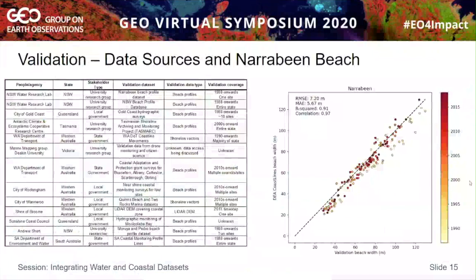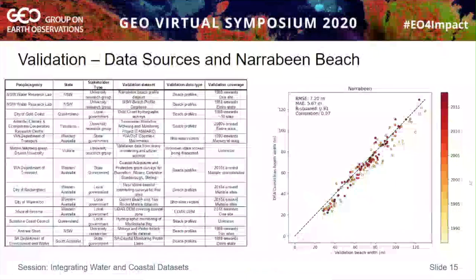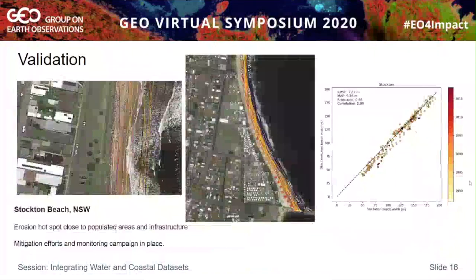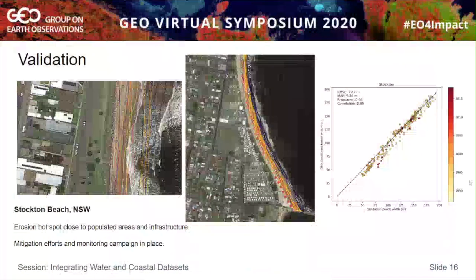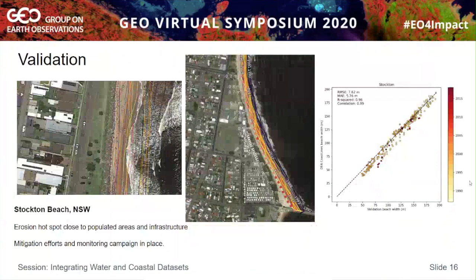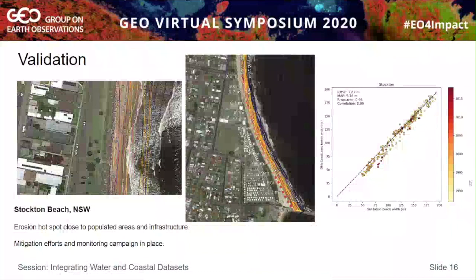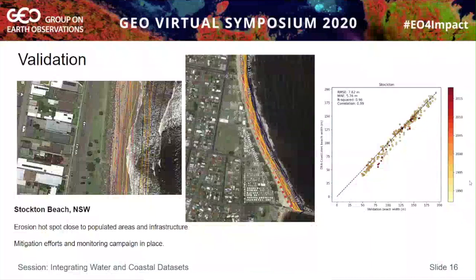We reached out to state and local government sources to obtain validation data, which they kindly supplied in multiple formats. Returning to Narrabeen Beach, our full model correlates well with the validation data across time. Another example with good validation results is Stockton Beach in New South Wales — an erosion hotspot with years of ongoing monitoring and mitigation efforts. To the north of the beach, a rock wall was built that has started to mitigate the early erosion occurring in the late 1990s. To the south, erosion continues in quite a linear fashion at almost one metre per year, very close to a caravan park. Given the correlation between our product and the validation data, we're quite confident in the accuracy of what we're seeing.